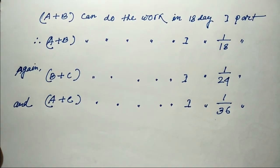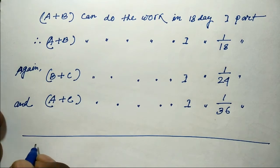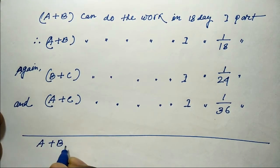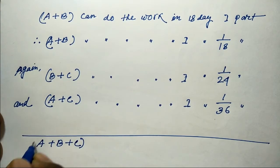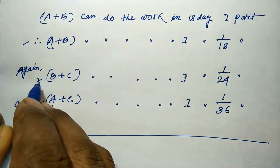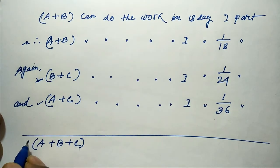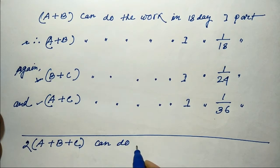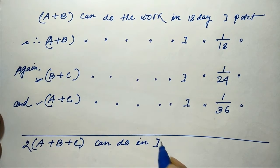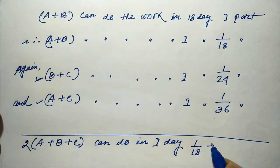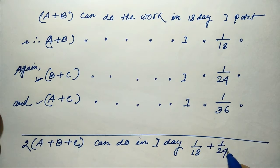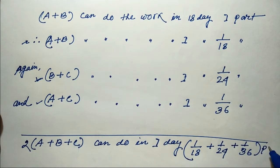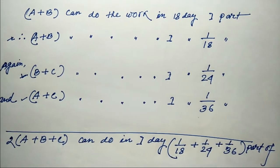So A plus B plus C — combining all three pairs gives 2A plus 2B plus 2C. Therefore, 2 times (A plus B plus C) can do in one day: 1/18 plus 1/24 plus 1/36 part of work.